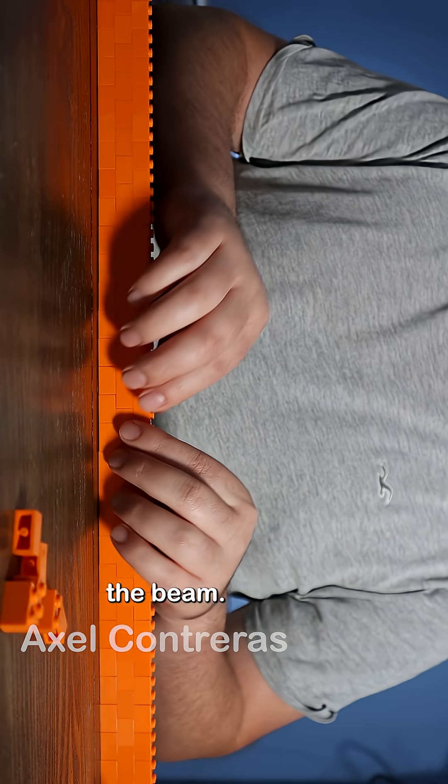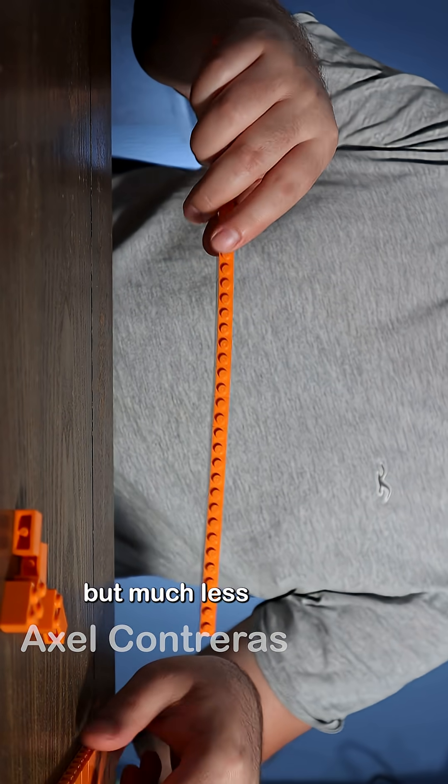Watch what happens when I shorten the beam. Now it's harder to bend. What seems so easy to curve is now much stiffer. It still bends, but much less.